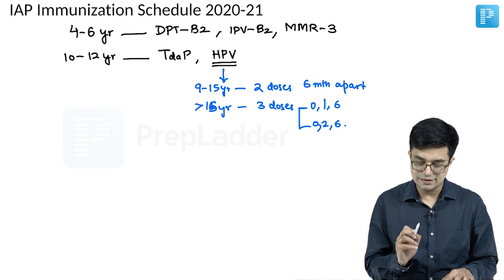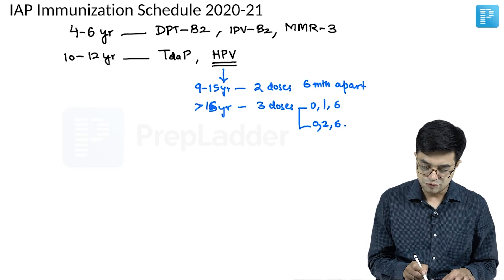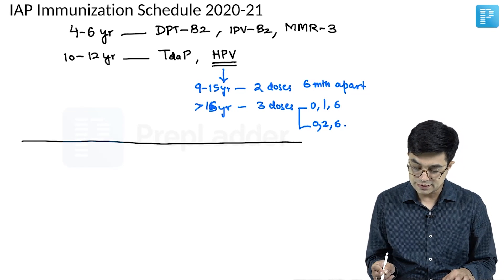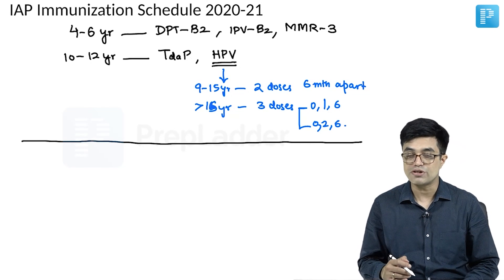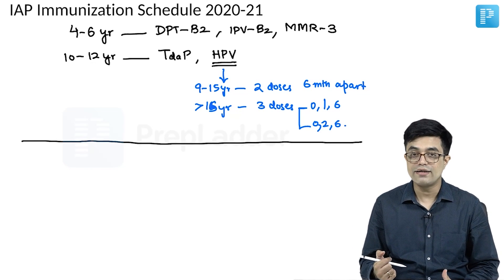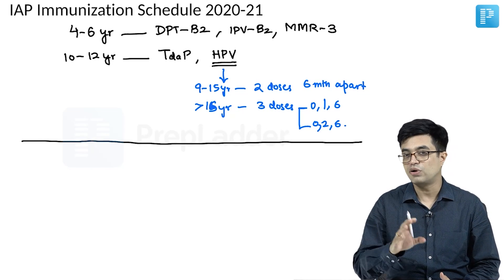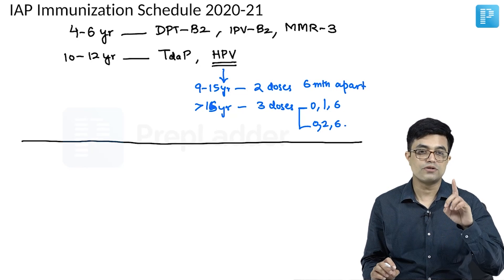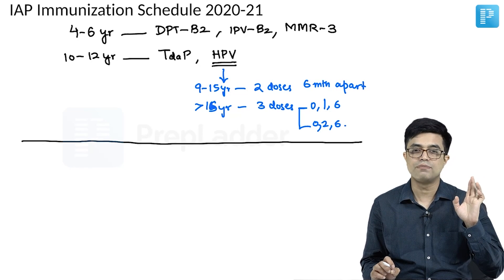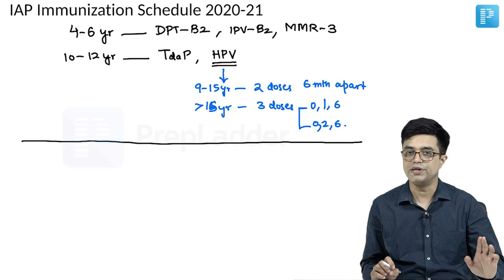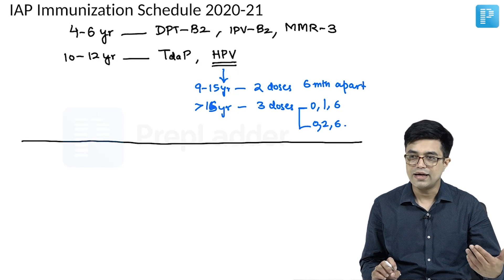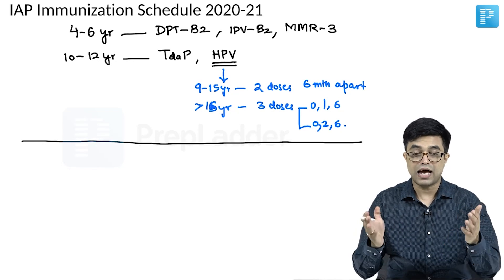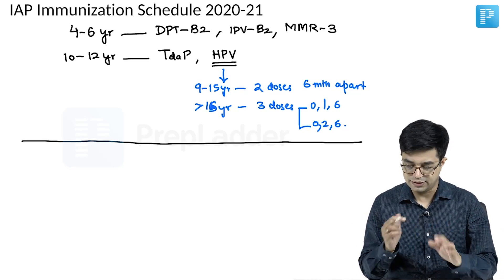This is the IAP immunization schedule, which looks similar to the national schedule but has certain important differences: it contains more vaccines, uses proper full-dose IPV rather than fractionated IPV, gives OPV only at birth with no subsequent doses, includes hepatitis A, typhoid conjugate vaccine, varicella vaccine, MMR instead of MR, and Tdap instead of TD.